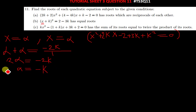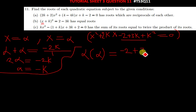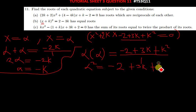Moving on to the multiplication of roots: when you multiply alpha times alpha you get alpha squared, which must equal C over A. Our C is the constant part: negative 2 plus 3k plus k squared, all divided by A which is 1. So alpha squared equals negative 2 plus 3k plus k squared.